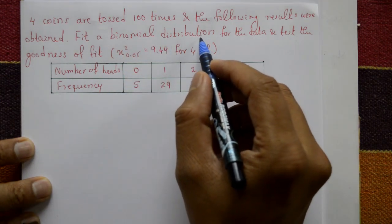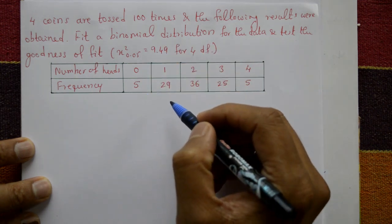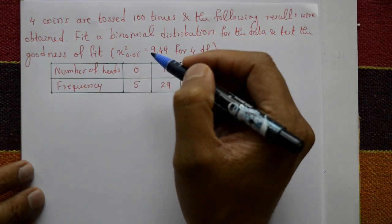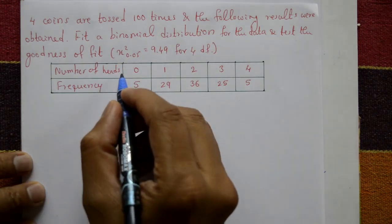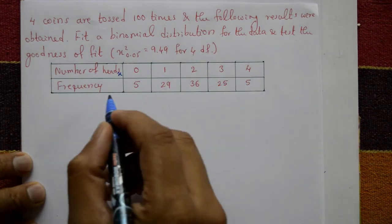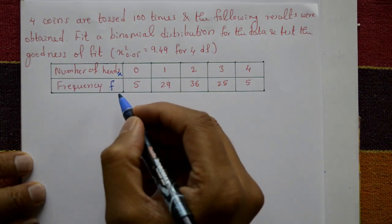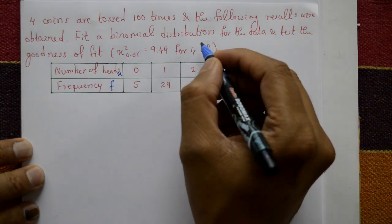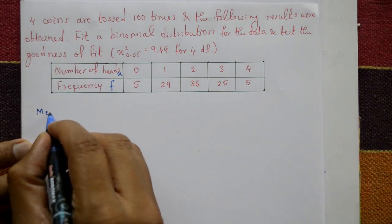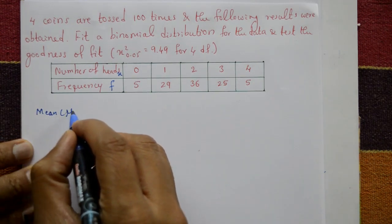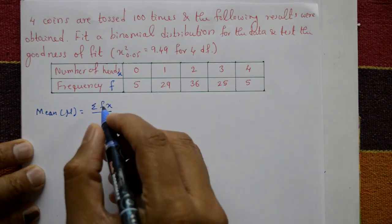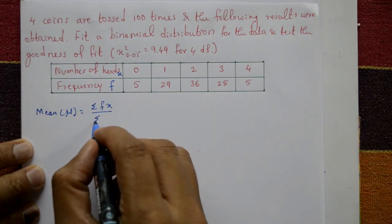First, follow the binomial distribution, then find the expected frequency, and then use the chi-square distribution formula. Here x denotes the number of heads: 0, 1, 2, 3, 4, and these are the corresponding frequencies. Now follow the binomial distribution and find the mean. Mean (mu) equals summation of fx divided by summation of f.